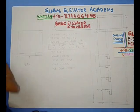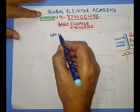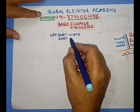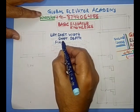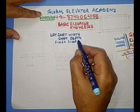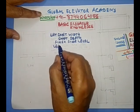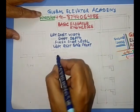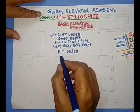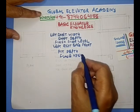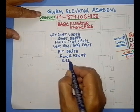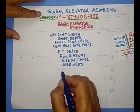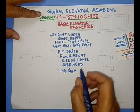And today we shall learn lift shaft width, then we shall learn shaft depth, then we will learn finished floor level, then left wall, right wall, back wall, and front. Then we will learn pit depth, then floor height, then rise or travel, then overhead, then machine room height.